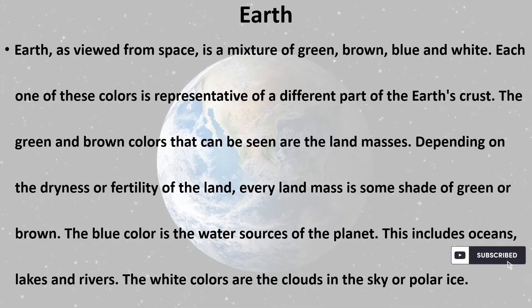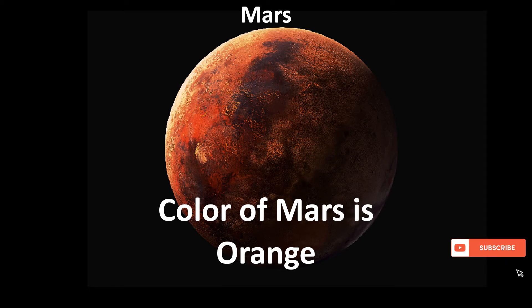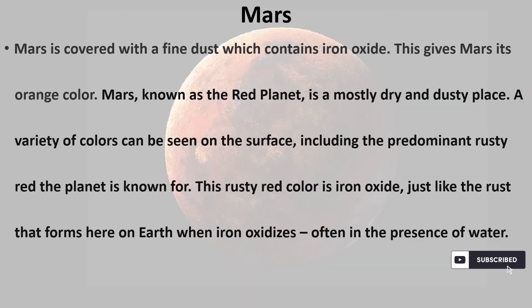The color of Earth is green and blue. Earth as viewed from space is a mixture of green, brown, blue, and white. The green and brown colors represent the land masses — depending on the dryness or fertility of the land, every land mass is some shade of green or brown. The blue color represents water sources including oceans, lakes, and rivers, while the white colors are the clouds in the sky or polar ice.